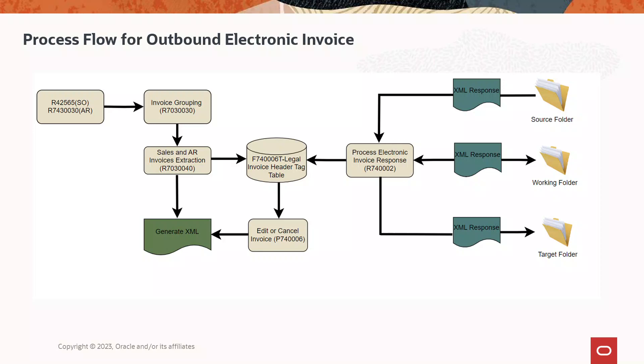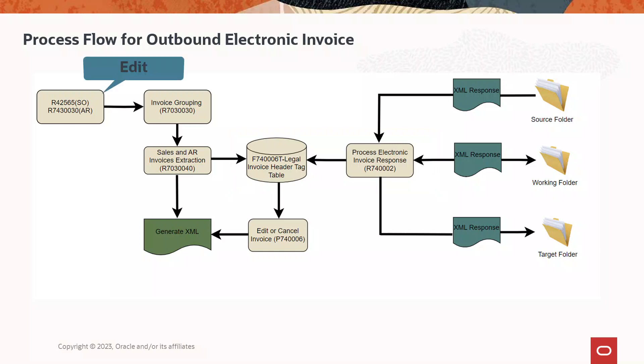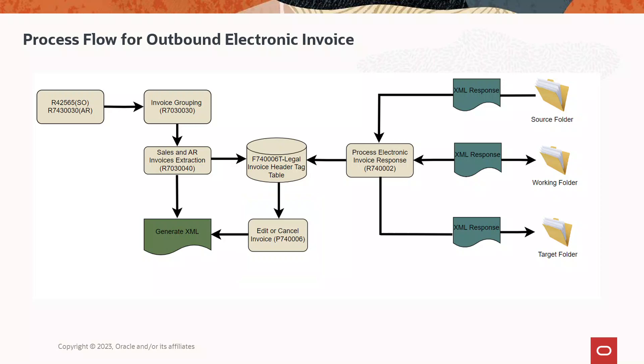After the authorities validate the invoices, the system processes the response received from tax authorities and updates the status in the legal invoice header table. If the invoices are rejected, you can edit them as per the required changes and run through the entire process to get them approved. The system also enables you to cancel your invoices. Note that you must submit the e-invoice to the respective tax authorities on your own or using a partner solution for approval.